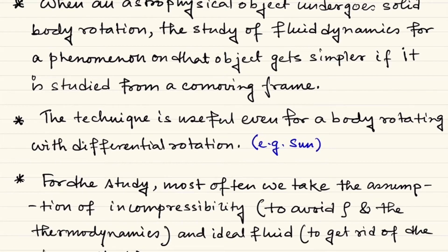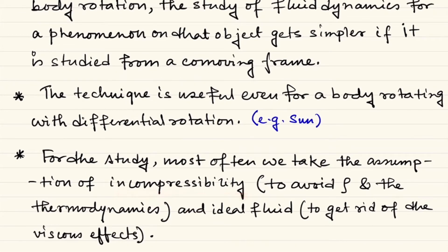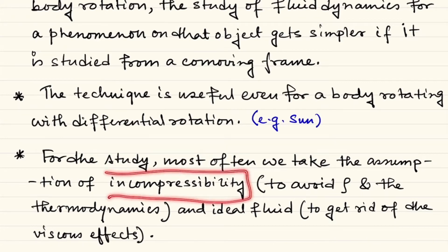For our study, which we will discuss mostly in the next lecture, we will consider the assumptions of incompressible fluid and ideal fluid. The incompressibility assumption is adopted because we want to get rid of rho and the thermodynamics part. Even with a barotropic closure, you are still thinking about thermodynamics. Here we use the simplest case — incompressible — and you are of course encouraged to do something more general.